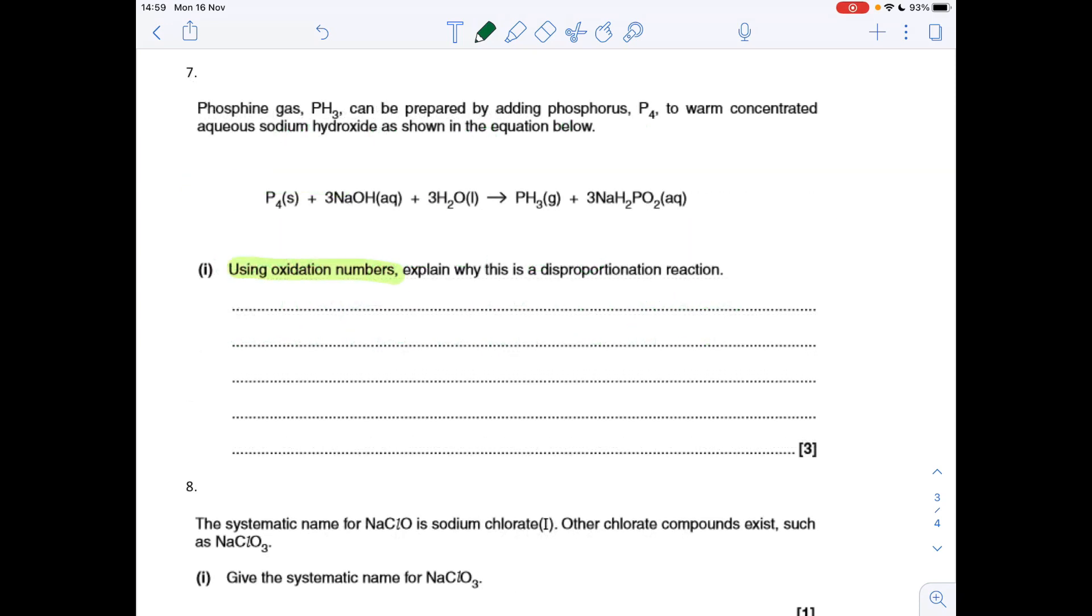Question seven now. We've got to use oxidation numbers to explain why it's a disproportionation reaction. Quick reminder, disproportionation is a redox reaction where the same element is oxidized and reduced. So if we look at this phosphorus, it starts out at zero. In PH3, well, the hydrogens are +1 each. So P is -3. So that's a reduction process because the oxidation number has gone down.